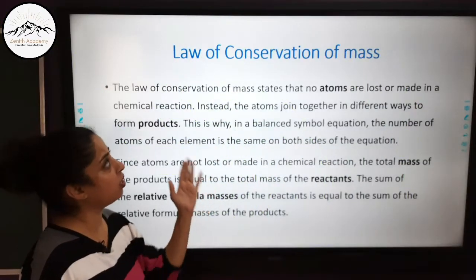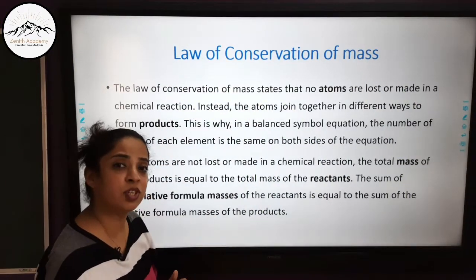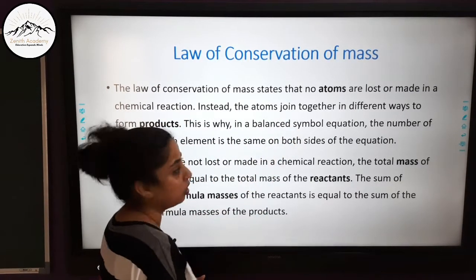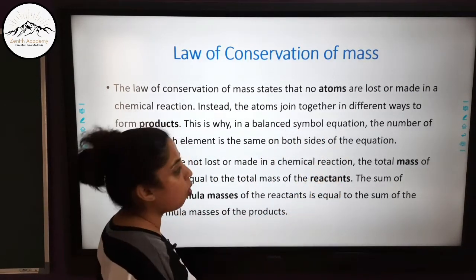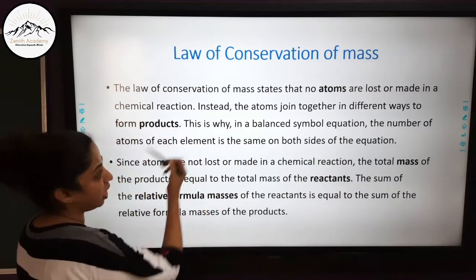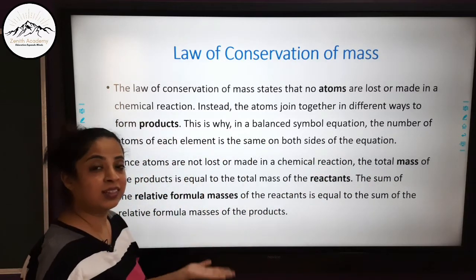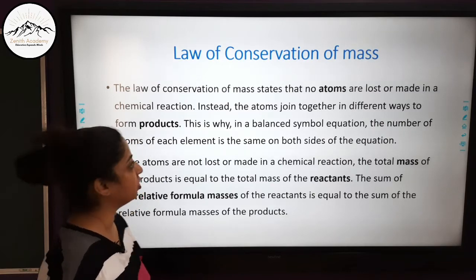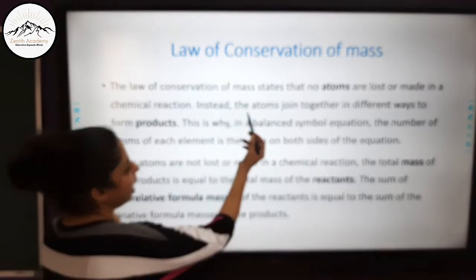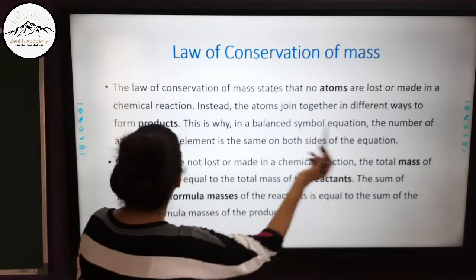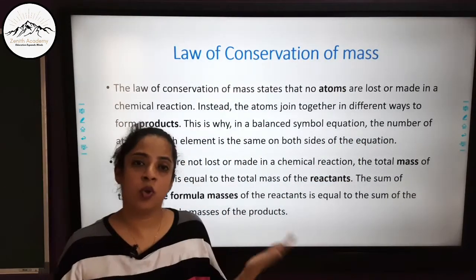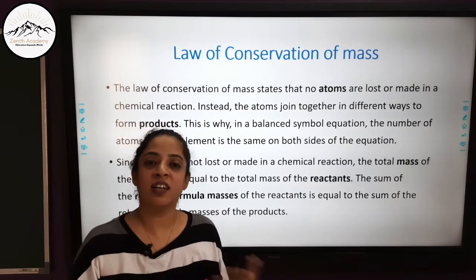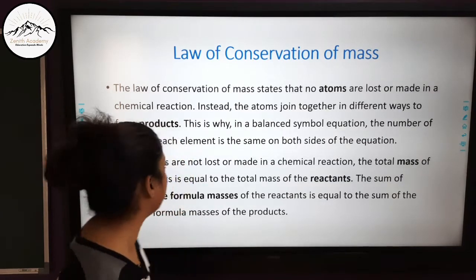First of all, let us understand what is the law of conservation of mass. The law of conservation of mass states that no atoms are lost or made in a chemical reaction — nothing is formed, nothing is lost. Instead, the atoms join together in different ways to form products. So no atoms are lost or made, but they rearrange themselves to form different products.